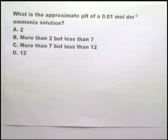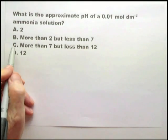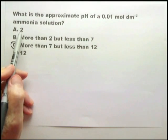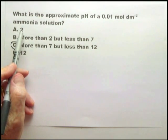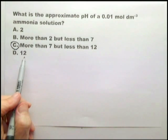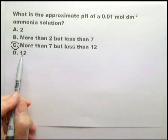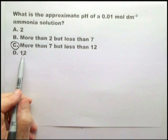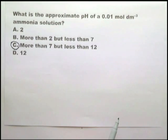You are expected to know that ammonia is a weak base. And therefore, the pH of a 0.01 moles per decimeter cubed solution would be more than 7 but less than 12. You must know that that is an acid, pH of 2. That is an acid, pH between 2 and 7. And that this would be the pH of a strong base at that concentration. Therefore, the only one that's left is C. You can do this one in 10 seconds.